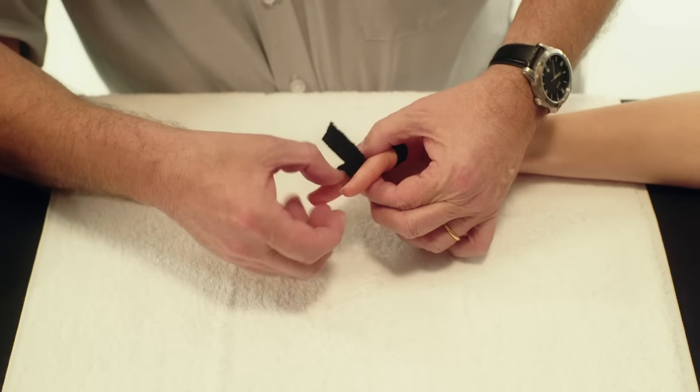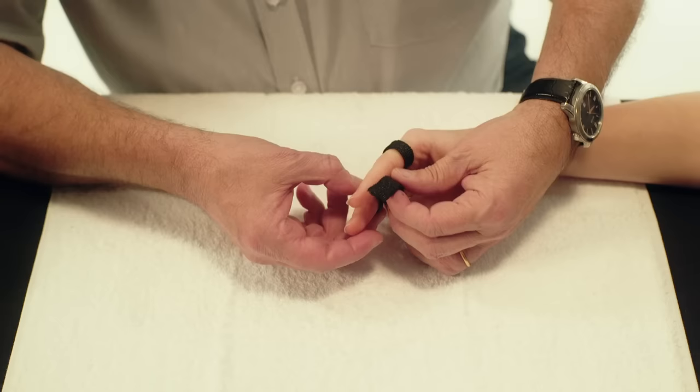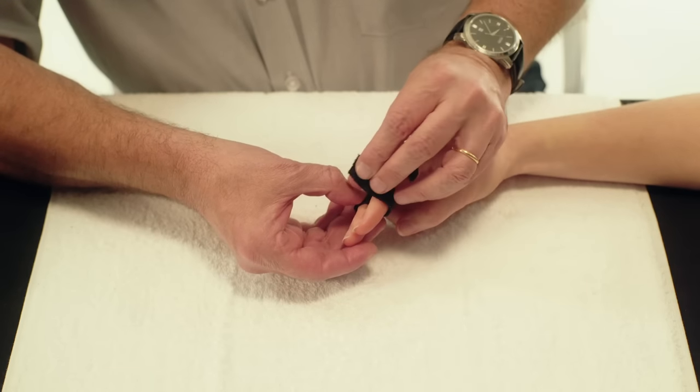Repeat the same for the second part of the orthosis, which rests over the middle phalanges, positioning it between the PIP and DIP joints.